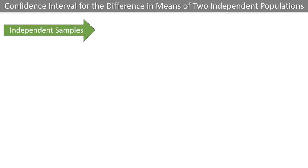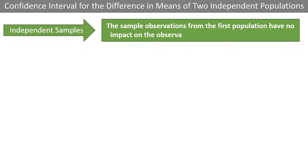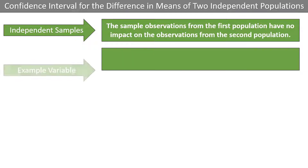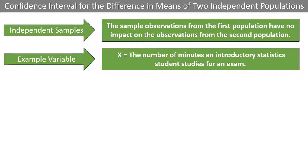By independent, I mean that the sample observations from the first population have no impact on the observations from the second population. Let's say our variable, x, is the number of minutes an introductory statistics student studies for an exam.